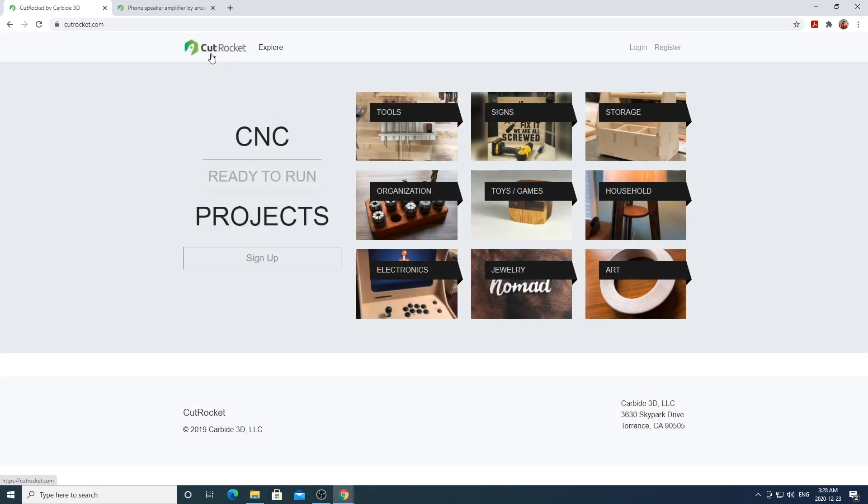After you have Carbide Create installed head on over to cutrocket.com. Cutrocket is a file sharing site for CNC projects that are made either in Carbide 3D or Fusion 360. Now this site does not have a ton of projects but it is fairly new and does seem to be slowly growing so make sure you have a look around. I've found some interesting stuff here too so it's definitely worth exploring.